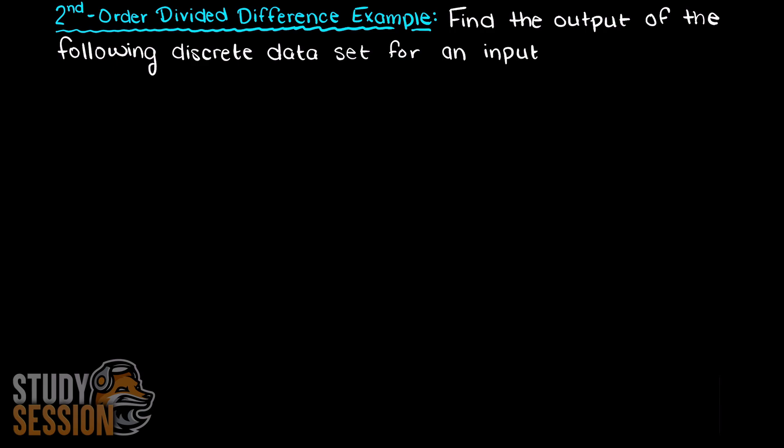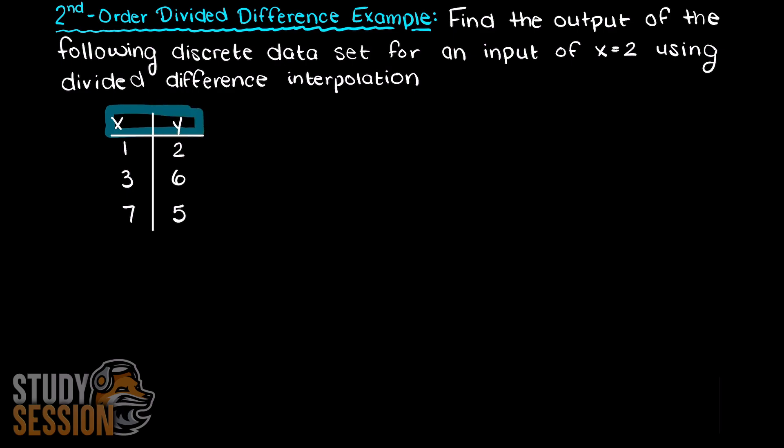This question is asking us to find the output of the following discrete data set for an input of x equals 4. If you missed our previous video on the theory and intuition behind the divided difference method, I recommend that you check out that video first. I will leave a link in the description down below for anyone interested.